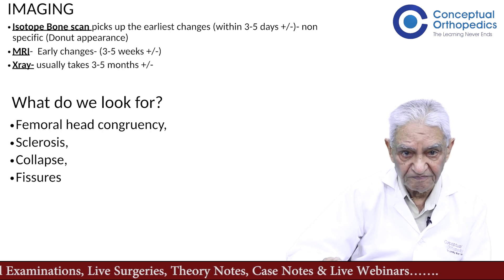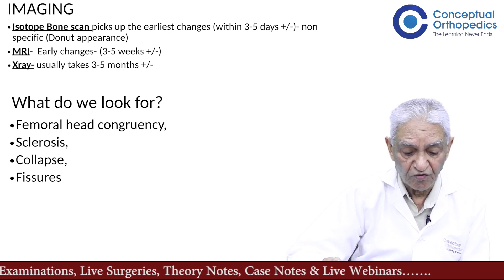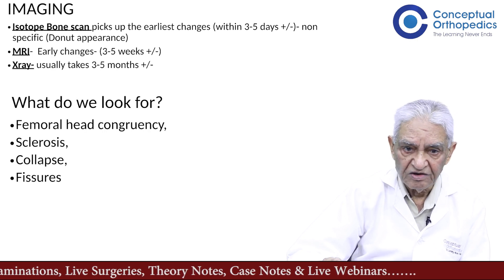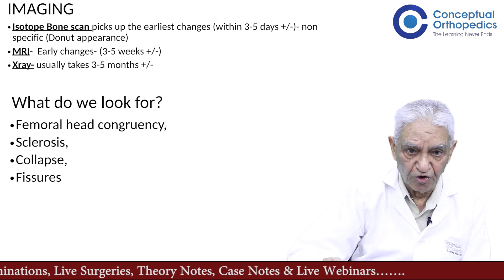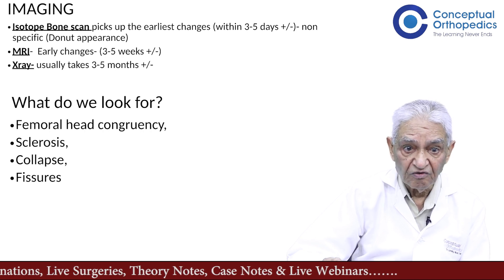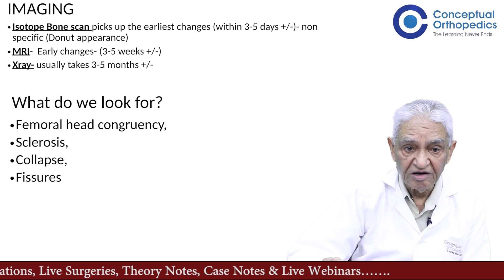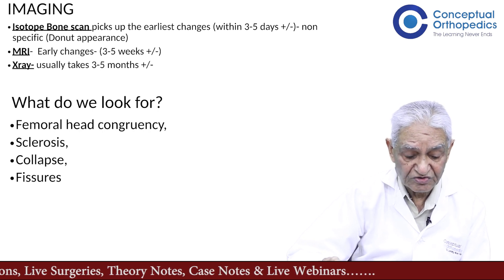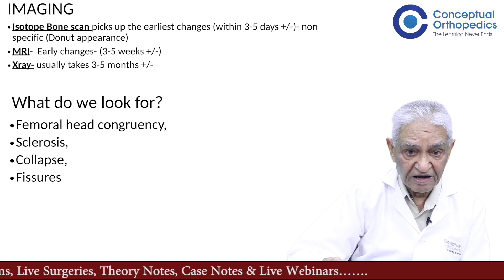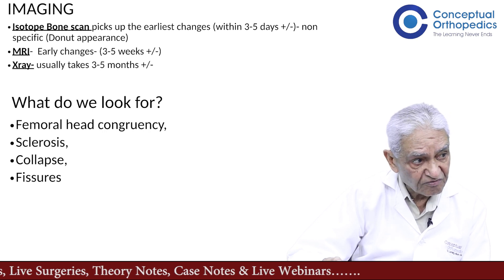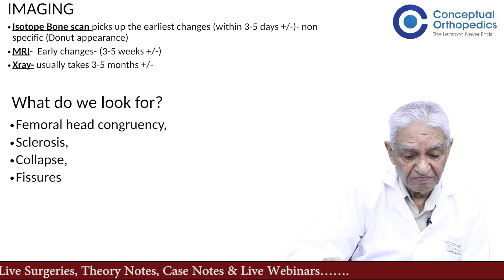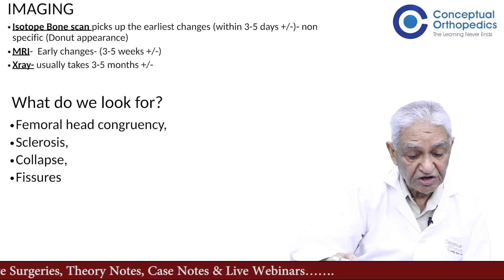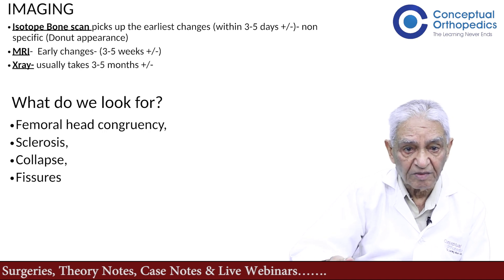What do we look for on X-rays? We assess femoral head congruency — is the head spherical or fragmented? Is it depressed? Are there areas of sclerosis? Are there areas of collapse? Are there any fissures, which indicate microfractures? As we pass through this talk we will see all these findings in different patients.